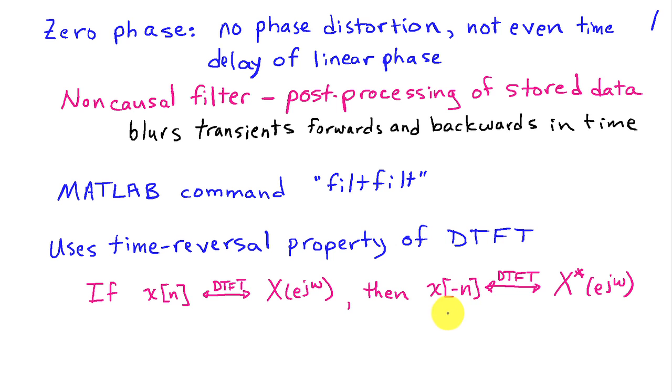So replacing n by -n simply flips the signal, as I've illustrated here, where I've shown a signal x[n], and then when we do the time reversal operation, the signal gets reversed or flipped and goes in the opposite direction.